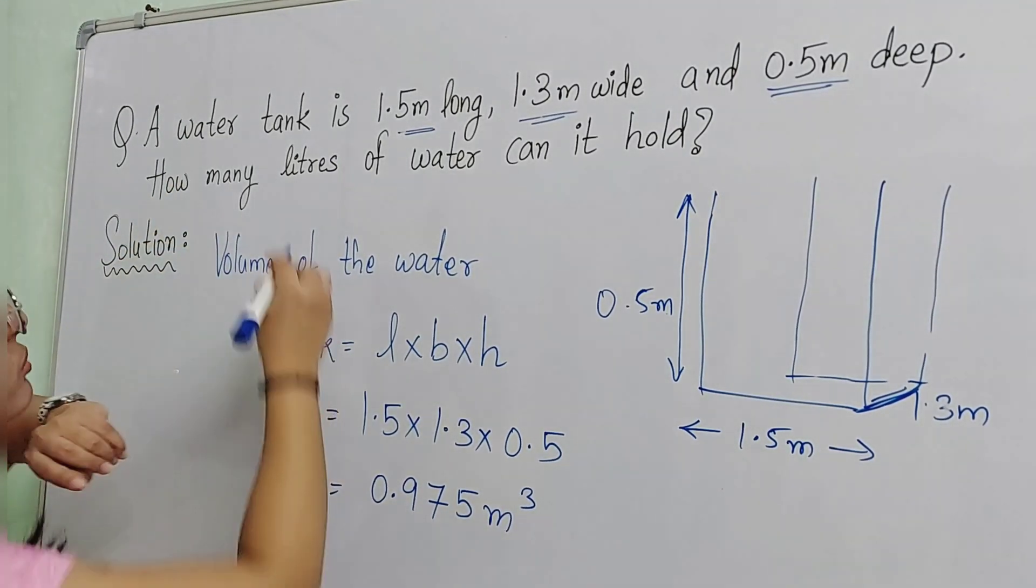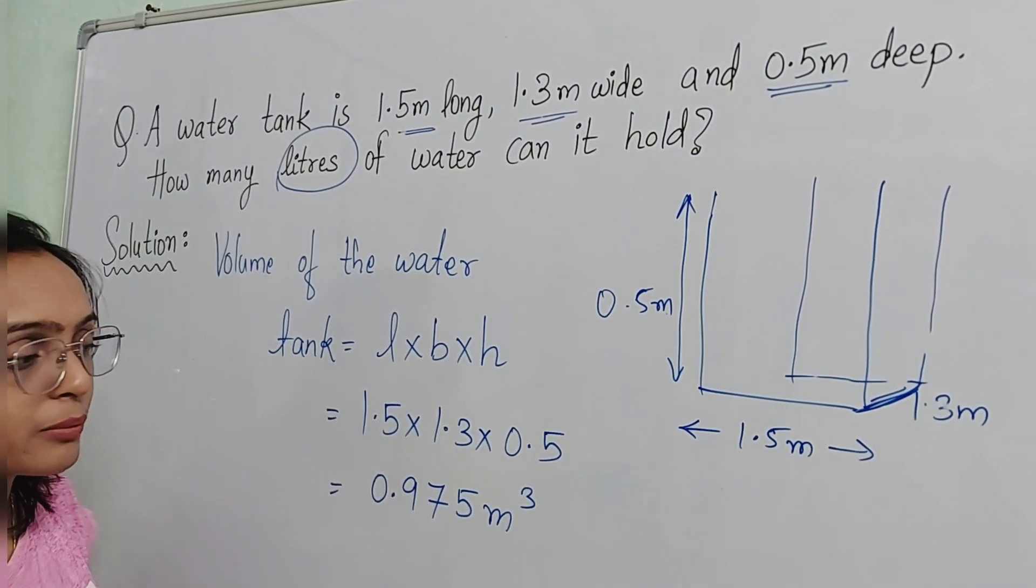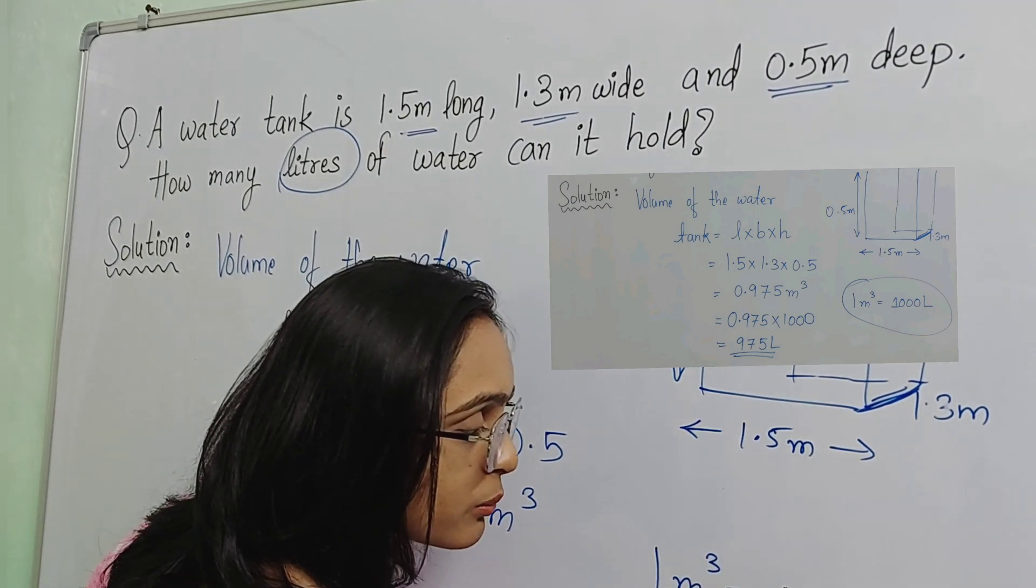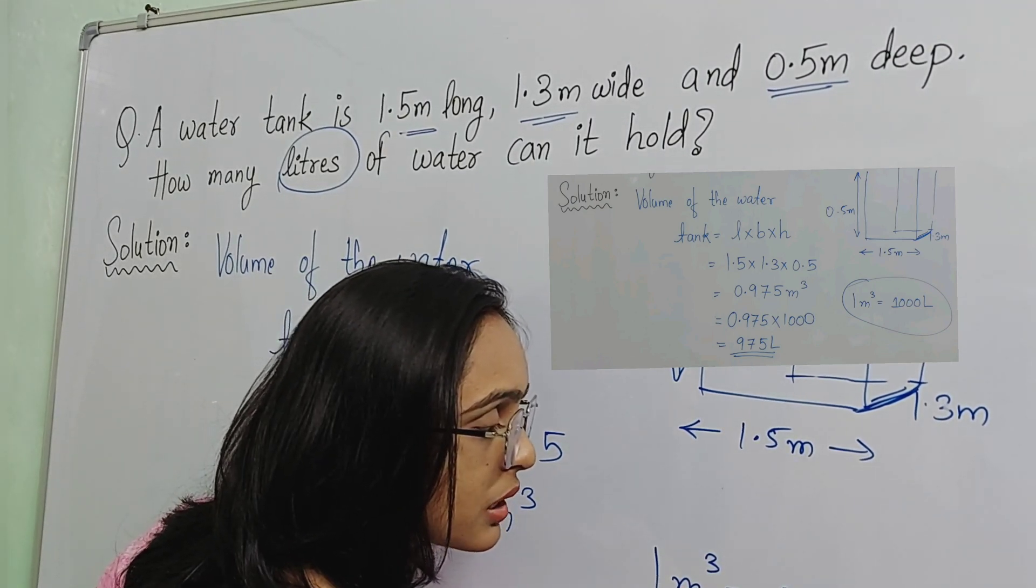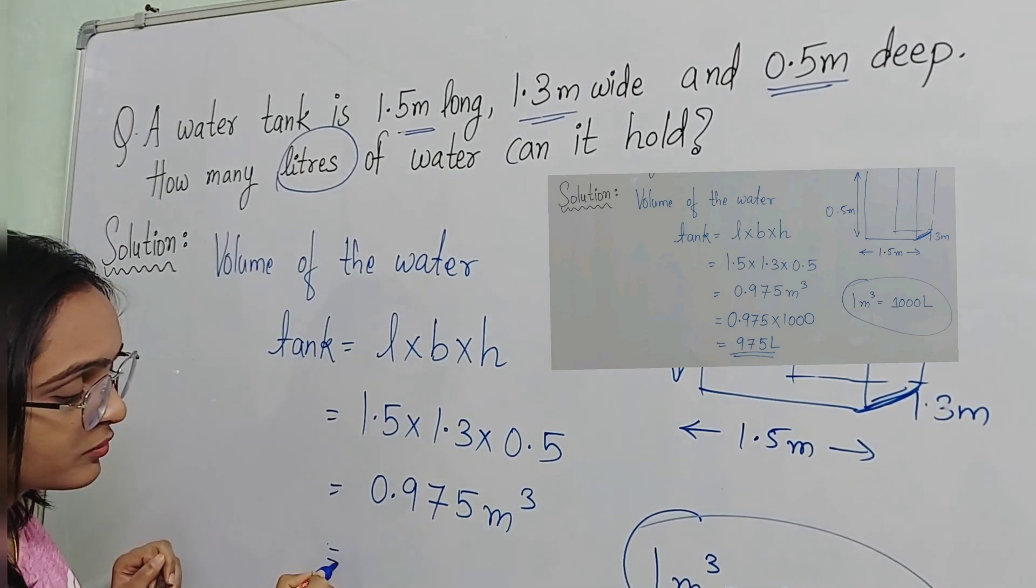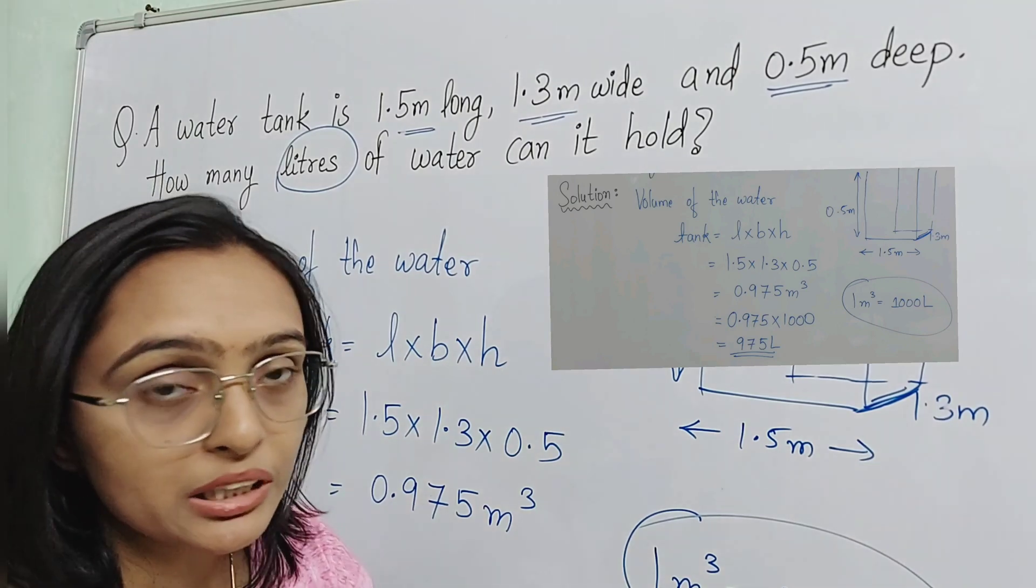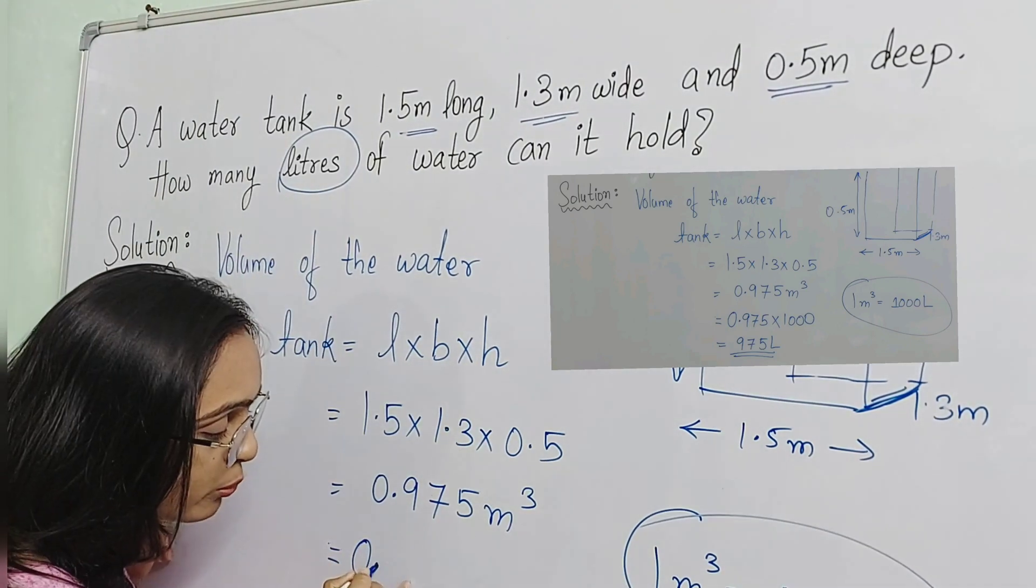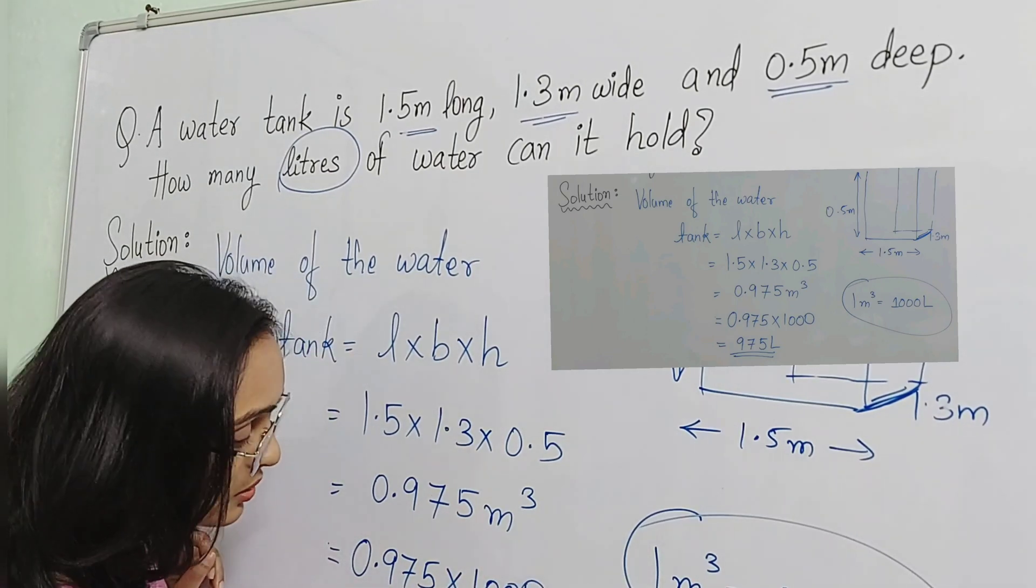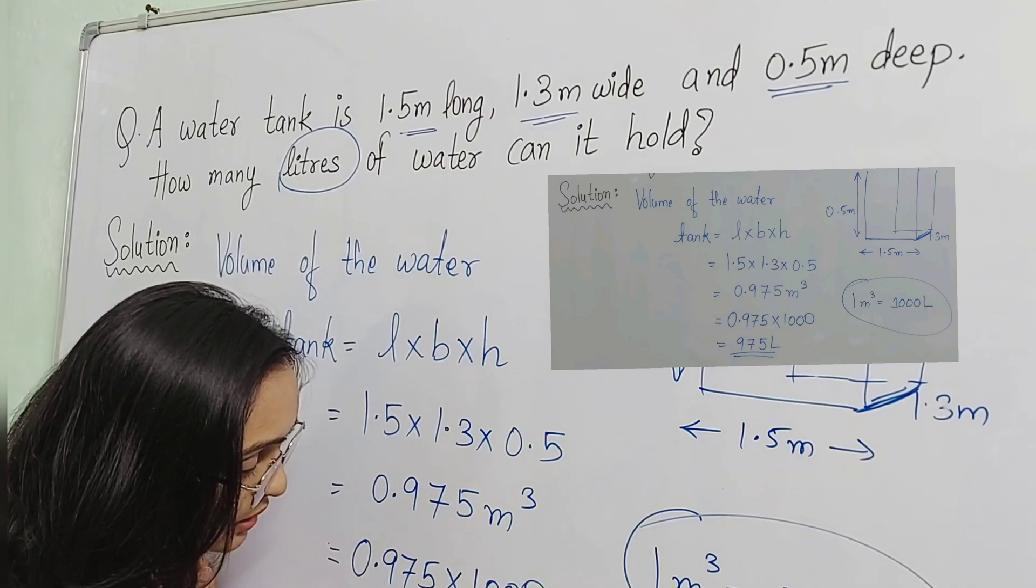And the question is, how many liters of water it can hold? I have to convert this to liters. I know that 1 meter cube is equal to 1000 liters. So, smaller to greater, you will multiply by 1000. 0.975 multiplied by 1000 gives you 975 liters.